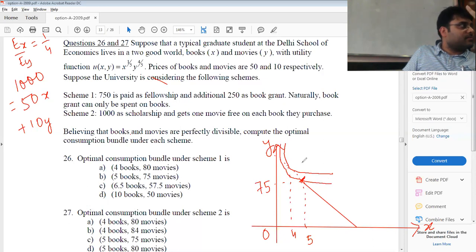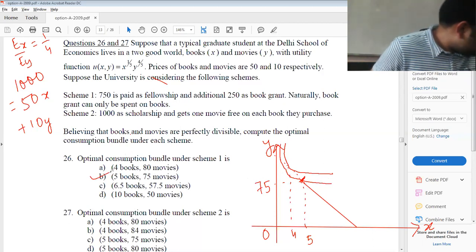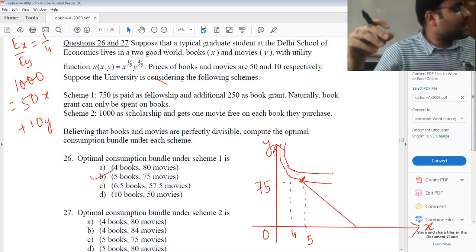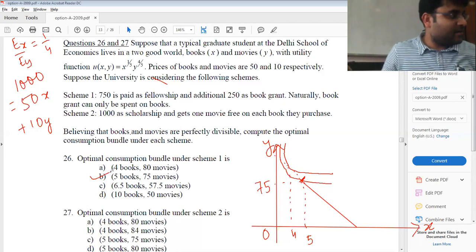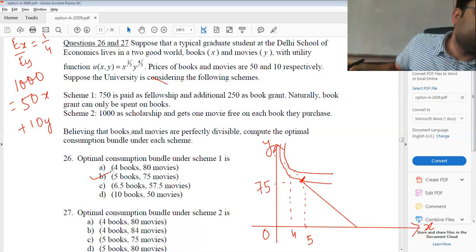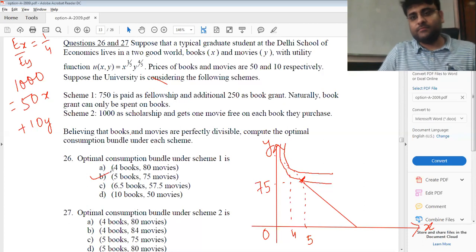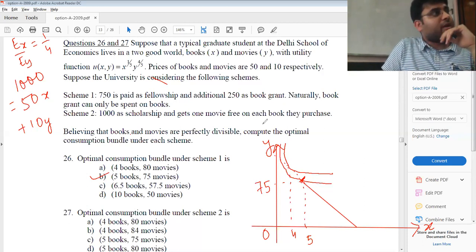Because the budget line is not there. So what is the answer? 5, 75. The next best alternative. Please understand, it's not tangential at that point. The utility is not tangential to the budget line at that point. It's only the best point given the budget line. Is this okay? Now look at scheme 2.